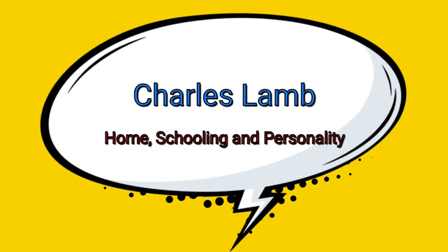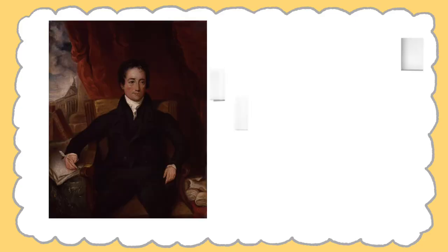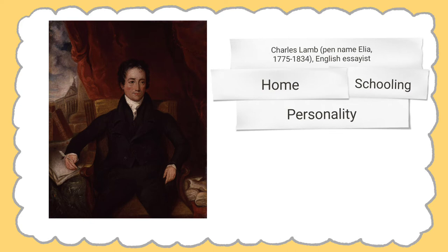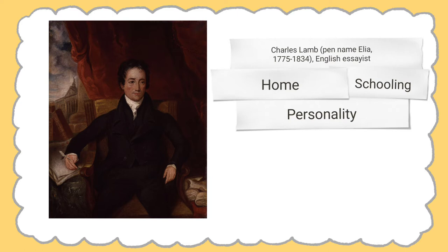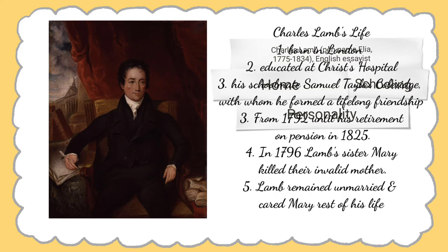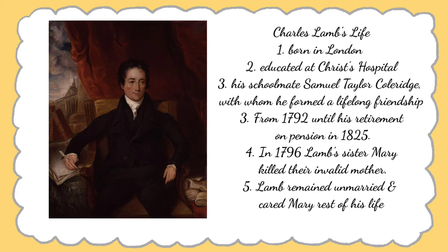To understand Charles Lamb we have to understand the very person, the family background, and the very schooling of that person. Charles was the seventh and youngest child of John and Elizabeth Lamb. All of his brothers and sisters died except John Lamb and Mary Anne, who survived through childhood. Born in 1775, Charles continued his schooling at Christ Hospital, and there his association and friendship with different personages shaped Charles Lamb's future artistic caliber.